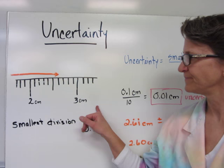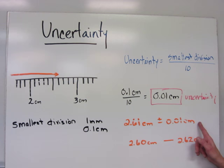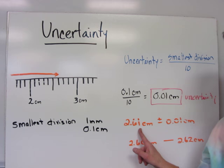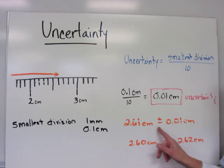When you make that measurement, you might say 2.61 centimeters plus or minus 0.01. It is assumed, if that's not written, that the 0.01 is plus or minus 0.01. This means that if you subtract that uncertainty, you get 2.60. If you add it, your measurement could be up to 2.62.